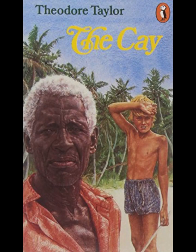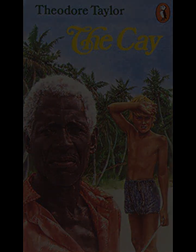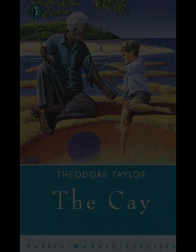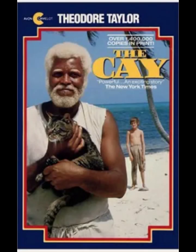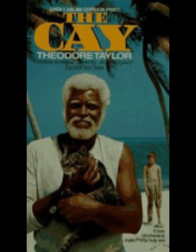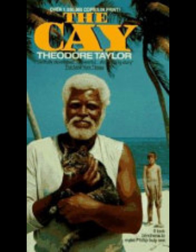Timothy, who is resourceful, patient, and deeply compassionate, takes on a parental role, teaching Philip how to survive despite his blindness. Timothy's guidance helps Philip develop resilience and independence, which are crucial for his survival. The bond between the two deepens as they face numerous challenges on the cay, including finding food, water, and shelter, and preparing for potential storms. The novel's setting, a barren tropical island, creates a sense of isolation that intensifies the emotional and physical stakes of the story. The harshness of the environment forces the characters to rely on their ingenuity and on each other, and it also serves as a backdrop for Philip's internal journey.